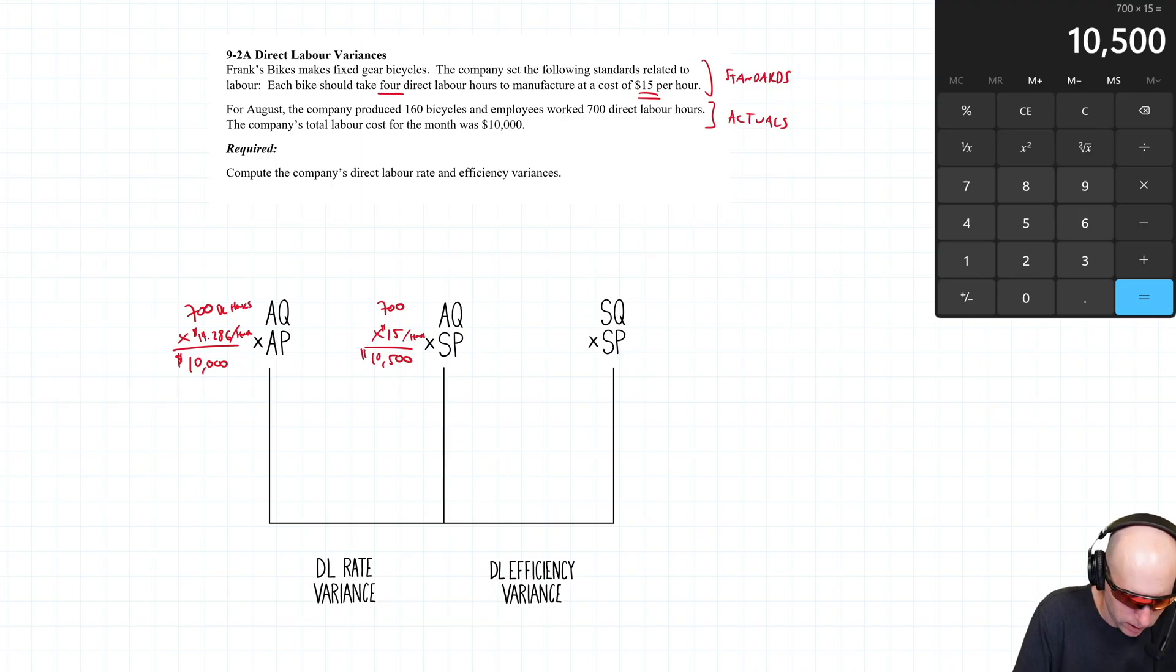Now we take the difference between the two. We're $500 apart—that's a variance of $500. Is the variance good or bad? We don't say good or bad; we say favorable or unfavorable. We actually paid our employees around $14.28 an hour. Our standard says $15 an hour. This is favorable for the company—the company saved money on wages.